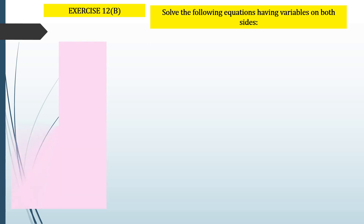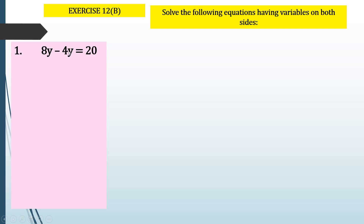Let's look at question number 1 from chapter 12b: 8y minus 4y equals 20. Here we have two variables, 8y and minus 4y, but they are like terms because they have the same variable y.